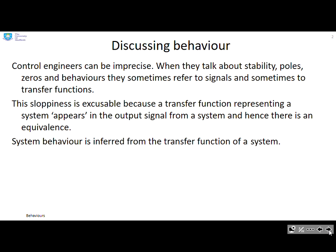When discussing behavior, control engineers can be quite imprecise when they talk about stability, poles, zeros and behaviors. They sometimes refer to signals and sometimes to transfer functions or systems. This sloppiness is excusable because a transfer function representing a system appears in the output signal from a system, and hence there's an equivalence between the signal and the system.